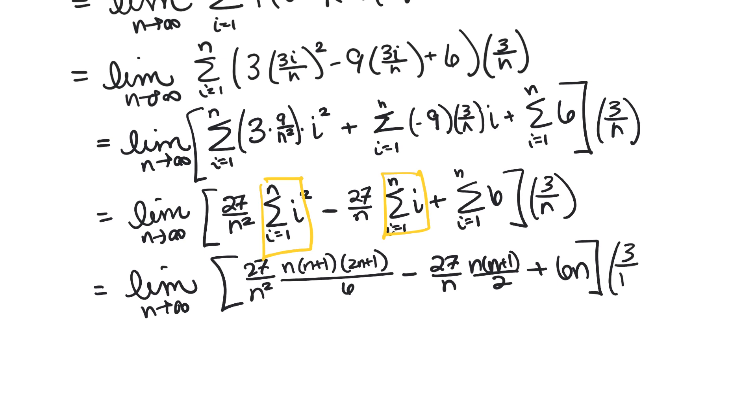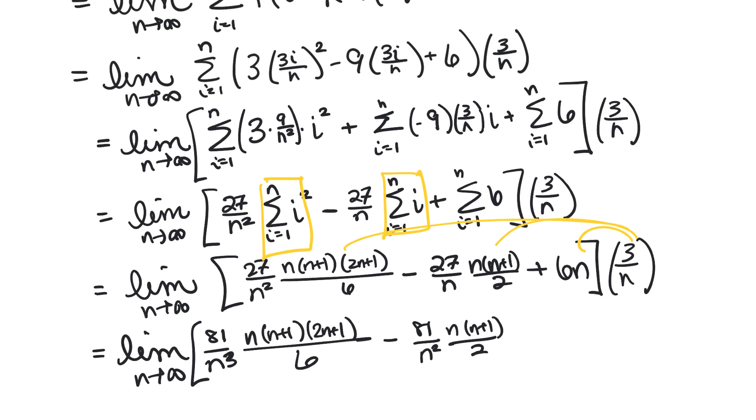And then lastly we need to distribute this 3 over n through to each term. So this is going to look like the limit as n goes to infinity of 81 over n cubed, n times (n plus 1) times (2n plus 1) over 6, minus 81 over n squared times (n plus 1) over 2, plus 18.